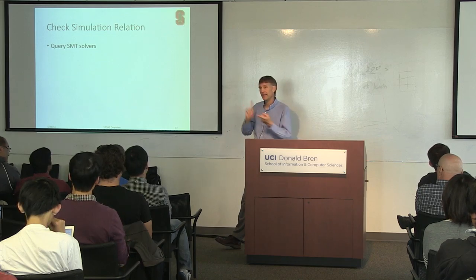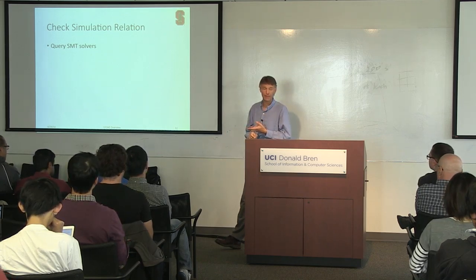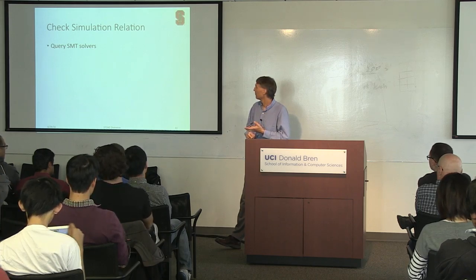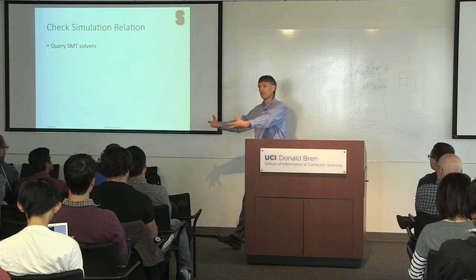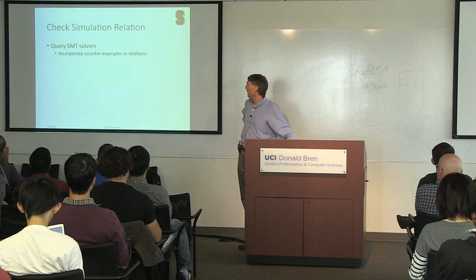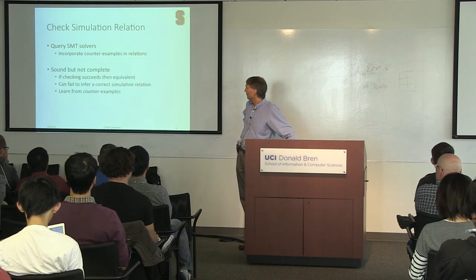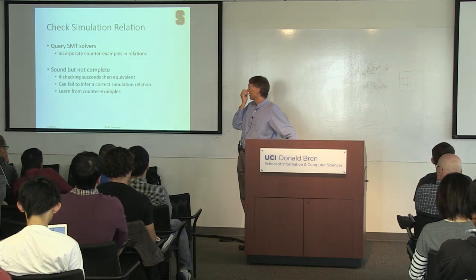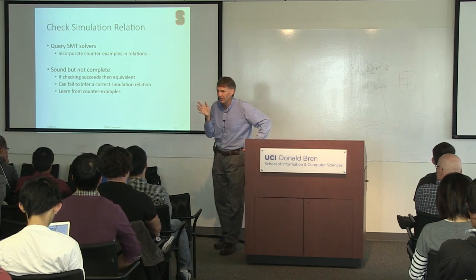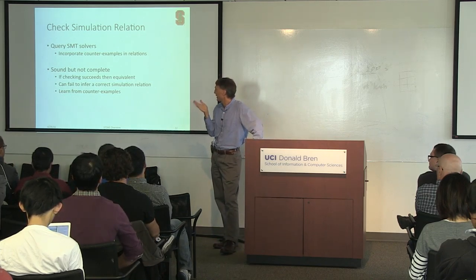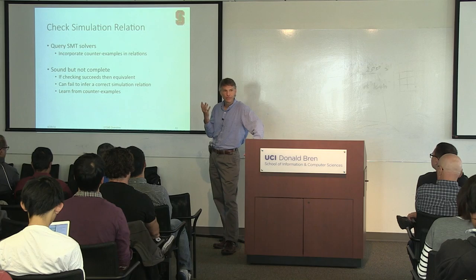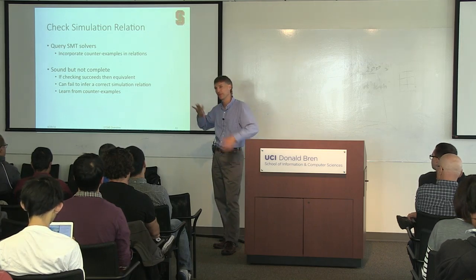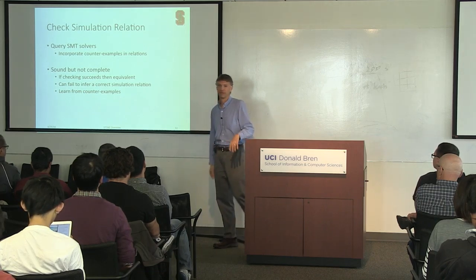Once we guess the cut points and hypothesize the invariants in the simulation relation, we build the proof obligations and query the SMT solver. This approach is sound but not complete: if it succeeds, the programs are equivalent, but it can fail to infer a correct simulation relation. We can often construct counterexamples when the proof fails, which we feed back into our test cases.